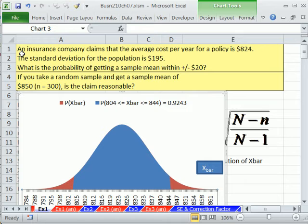Here's our example. An insurance company claims that the average cost per year for a policy is $824. We know that the standard deviation for the population is $195. Our first question is, what is the probability of getting a sample mean within $20, meaning we're going to have a range. And we want to know the probability between some lower and upper. What's the probability that if we go out and take a sample, it would lie within this range?